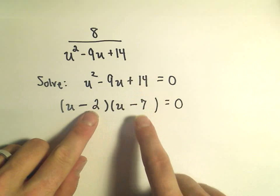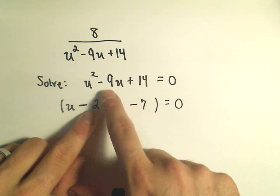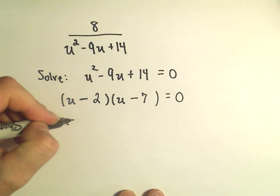Negative 2 times negative 7 is 14, and negative 2 plus negative 7 is negative 9. So if we set each piece equal to 0,